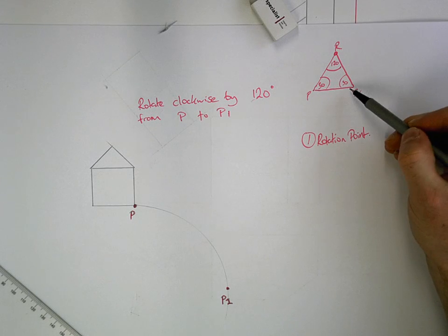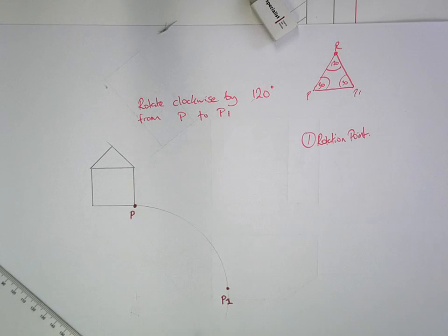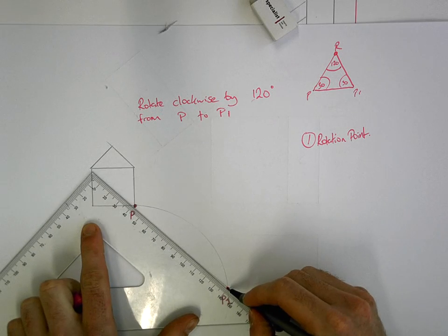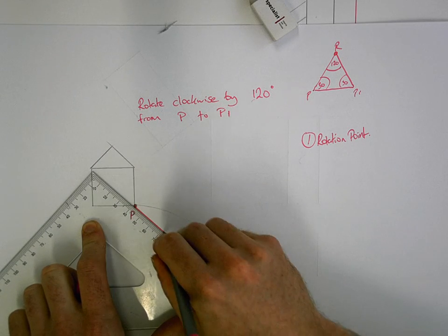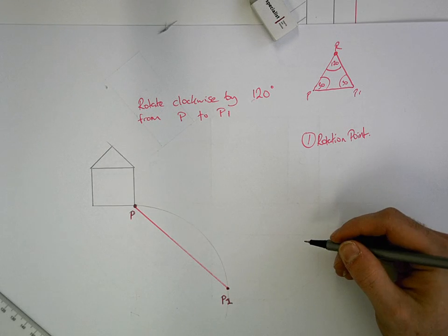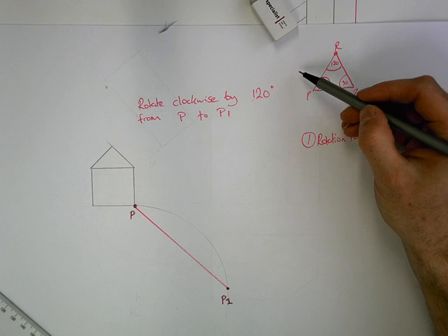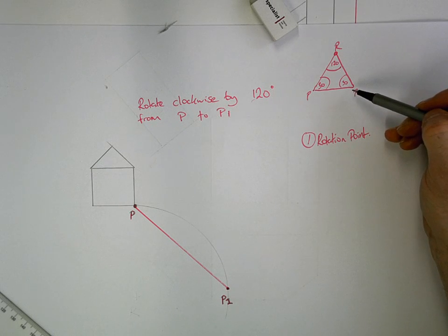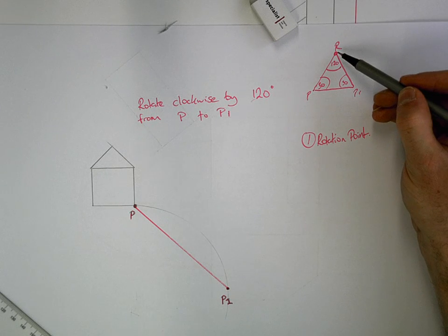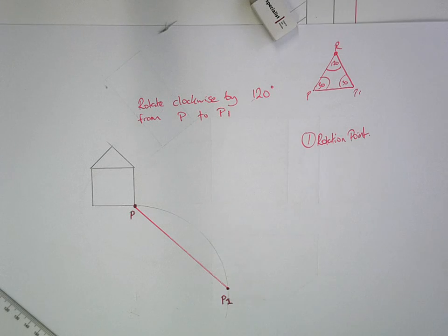So what we'll do is we'll join P to P1. That will be our base. We can do that. What we know is that the angle of P is 30 and we know the angle of P1 is 30. And where they meet is going to be point R. So we'll do that using our set square. You can use your protractor either.